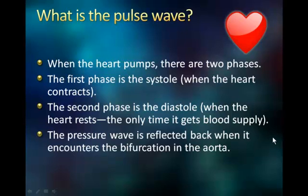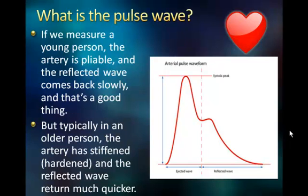The pressure wave is reflected back when it encounters the bifurcation in the aorta. As the aorta comes out of the heart, a couple of inches later there's a bifurcation — a fork in the road — and that fork creates a pulse wave that's reflected back. In a young person, the artery is pliable and the reflective wave comes back slowly, which is a good thing. But in an older person, the artery is usually stiffer and the reflective wave comes back much quicker.